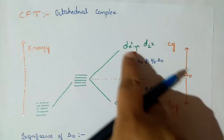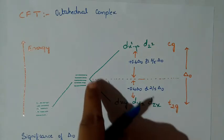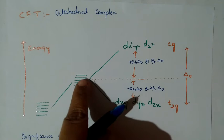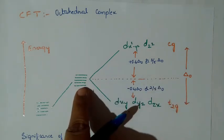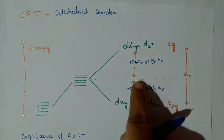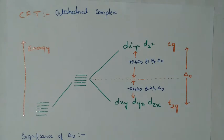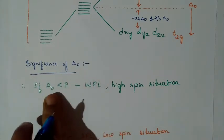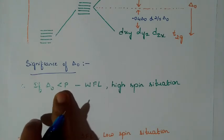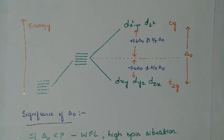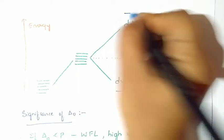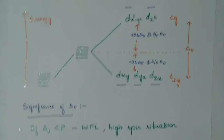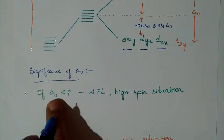Regarding the significance of Δo: if Δo is less than P (the pairing energy), we have a weak field ligand scenario. The gap between the two orbital sets is very small, so the fourth electron moves into the higher EG set rather than pairing up in the T2G set.